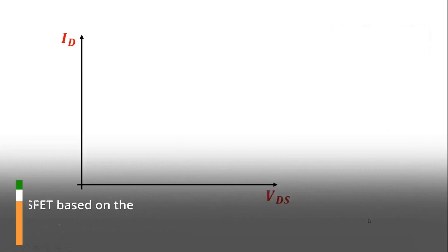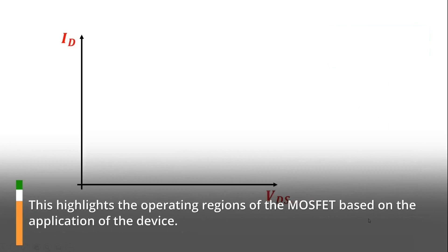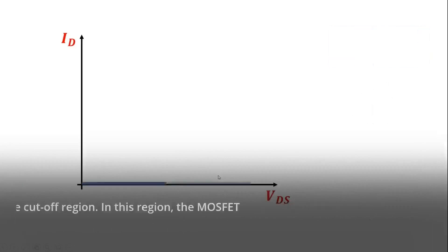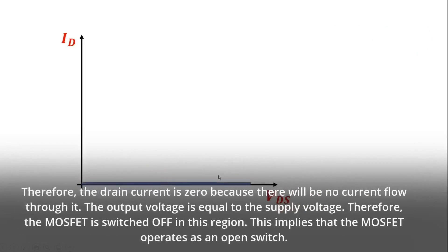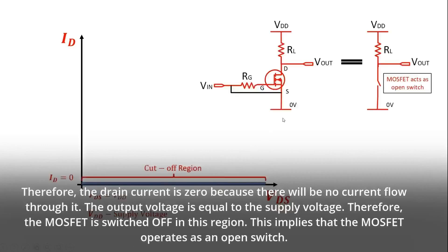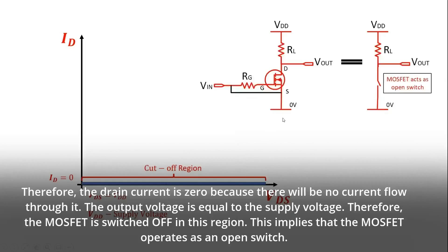This highlights the operating regions of the MOSFET based on the application of the device. The first region considered is the cutoff region. In this region, the MOSFET has no input gate voltage. Therefore, the drain current is zero because there will be no current flow through it. The output voltage is equal to the supply voltage. Therefore, the MOSFET is switched off in this region, which implies that the MOSFET operates as an open switch.